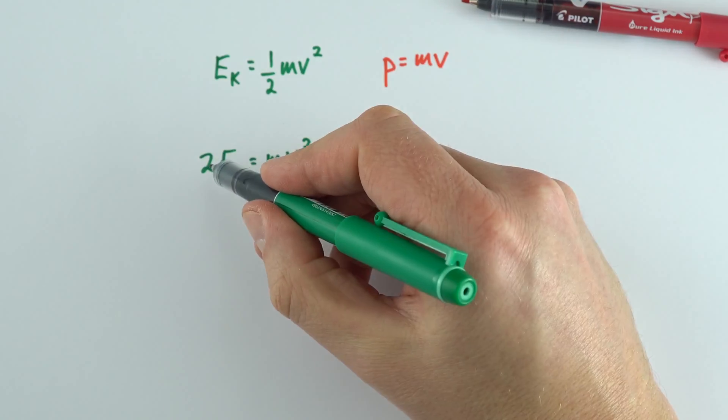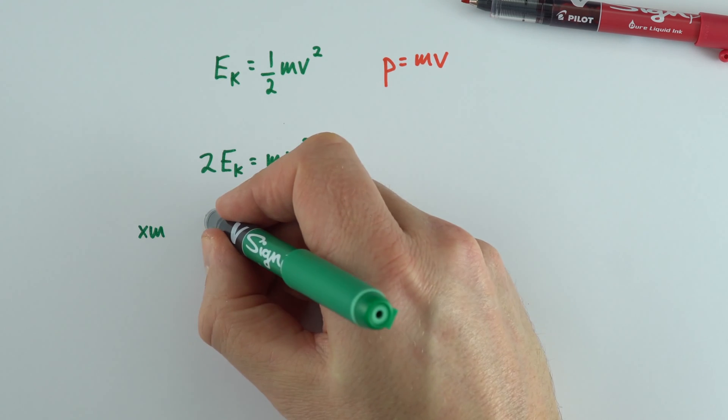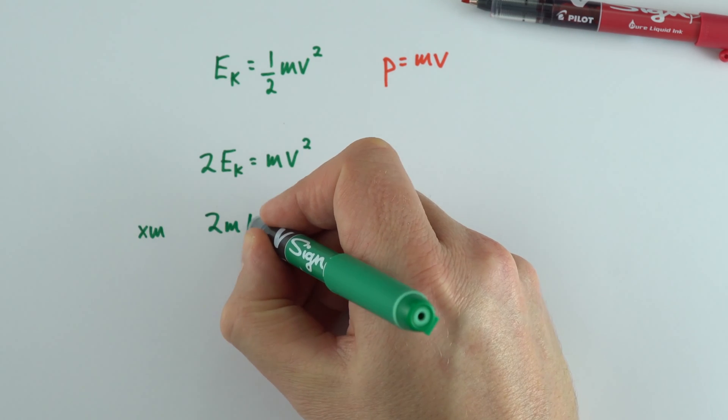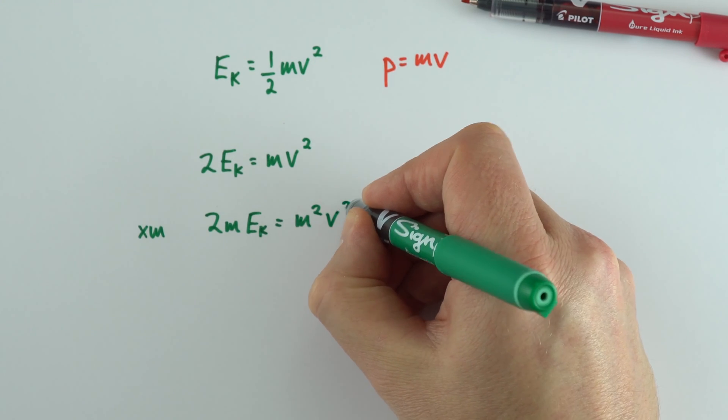Now the other thing we can do is multiply both sides by m. Whatever we're doing to this side of the equation, we do to the other. So we can also say that 2m times the kinetic energy Ek equals m²v².